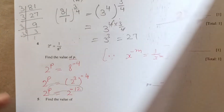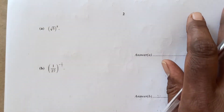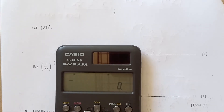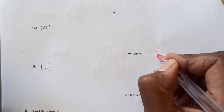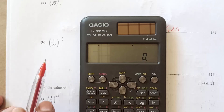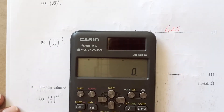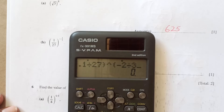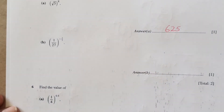Question 5: find the value of (√5)^8. We can simply use a calculator for that — the answer is 625. Question 6: we have (1/27)^(negative 2/3). Using the calculator: enter 1 divided by 27 in brackets, then raise to the power of negative 2 divided by 3. The answer is 9.